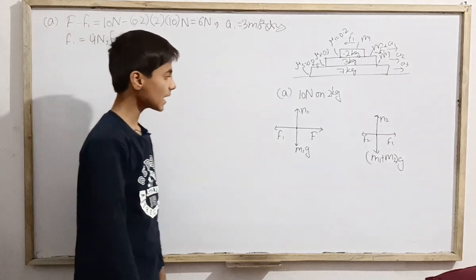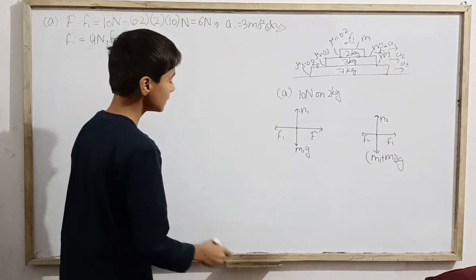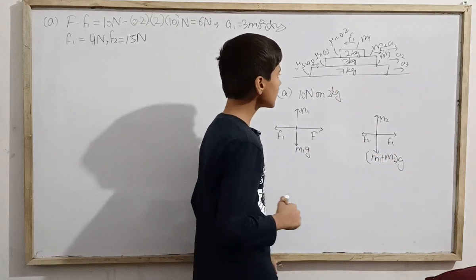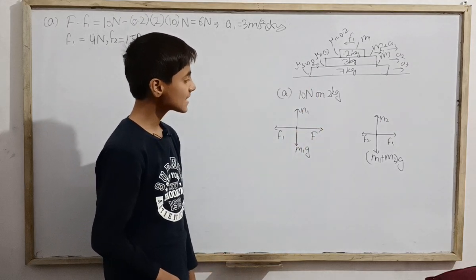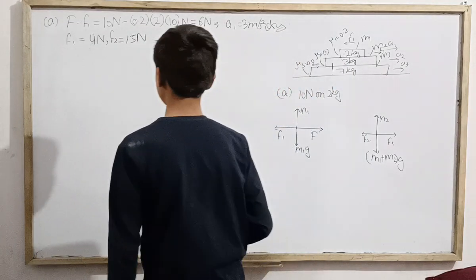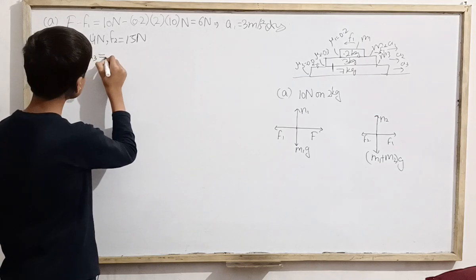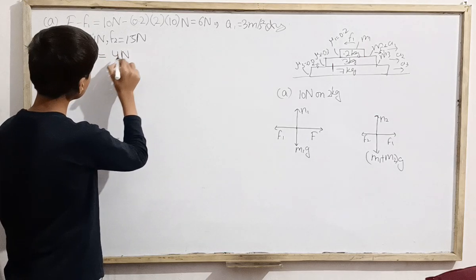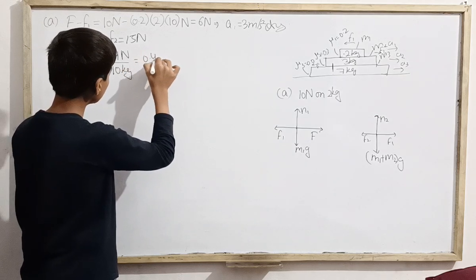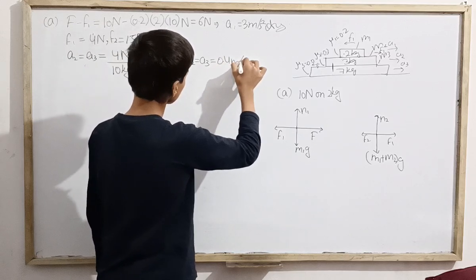Now, F2 magnitude equals 0.3 times 5 times 10, that is 15 Newton. We can see that F2 is far greater than F1. So the 2 kg block's acceleration won't be in the original direction. Instead, F2 will drive it along with the 7 kg block. So A2 and A3 should be equal since they move together. The driving force is 4 Newton divided by total mass of 10 kg, giving 0.4 meter per second square. So A2 equals A3 equals 0.4 meter per second square.